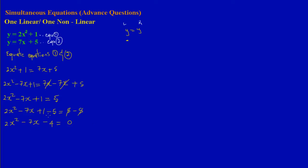We now have a quadratic equation in its general form. As noted in the previous playlist on solving quadratics, there are different ways to solve: by factorization or by using the quadratic formula. It doesn't matter which method you use unless specified. I chose factorization because it's quicker. When factorizing, a times c gives us 2 times negative 4, which is negative 8.